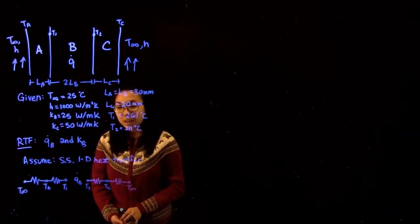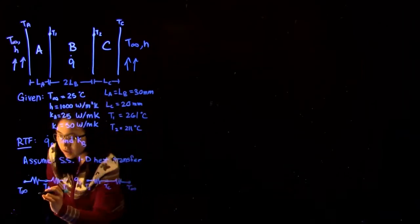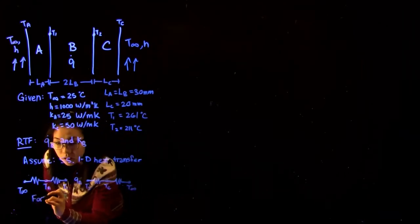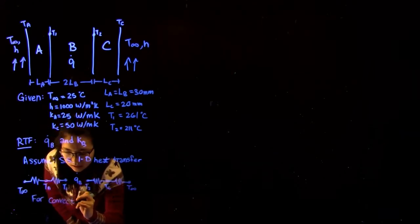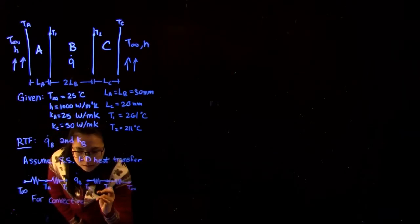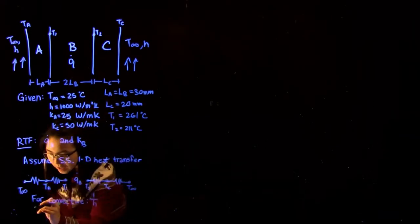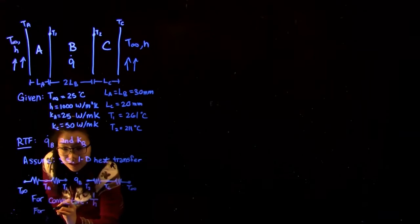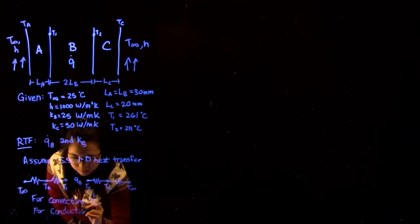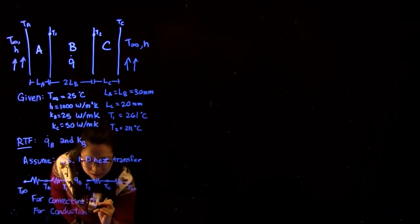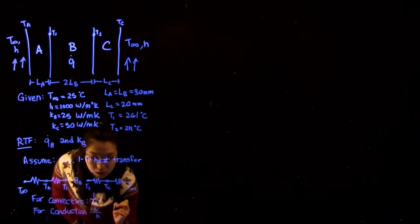The next step would be to find the resistances that each of these regions faces. We know that for convective purposes the resistance is equal to one over H the heat transfer coefficient. And when we're considering conduction the resistance is equal to the length over K.